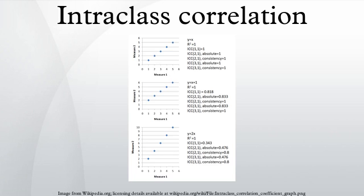In statistics, the intraclass correlation is a descriptive statistic that can be used when quantitative measurements are made on units that are organized into groups. It describes how strongly units in the same group resemble each other. While it is viewed as a type of correlation, unlike most other correlation measures it operates on data structured as groups, rather than data structured as paired observations.